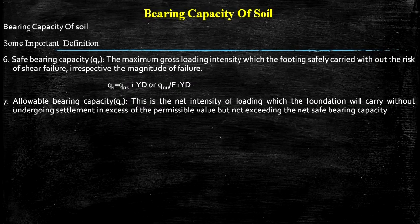This is the continuation of the first slide. The next definition is safe bearing capacity or Qs: the maximum gross loading intensity which the footing can safely carry without the risk of shear failure. The formula is Qs equal to QnF divided by F, plus gamma into D, where F means factor of safety, gamma means unit weight of soil, and D equals depth of foundation. The next definition is allowable bearing capacity or Qa: the net intensity of loading which the foundation will carry without undergoing settlement in excess of the permissible value, but not exceeding the net safe bearing capacity.